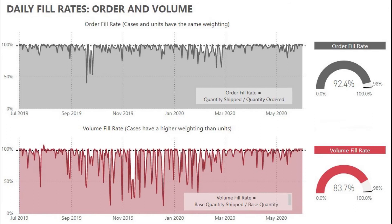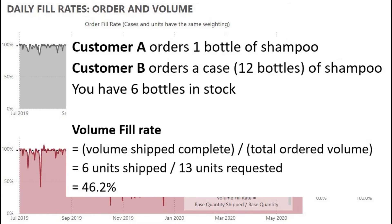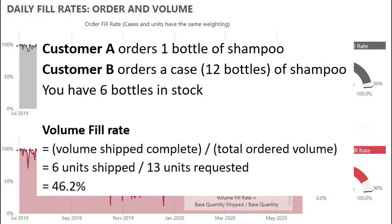For customer B, if you decided to send them the remaining five bottles you had in stock instead of waiting for a full case to be available, your volume fill rate would be 6 units shipped divided by 13 units requested, or 46.2%.